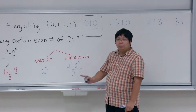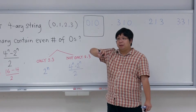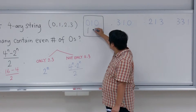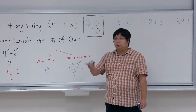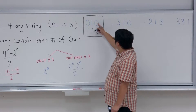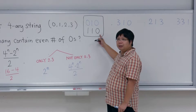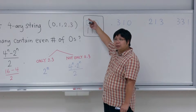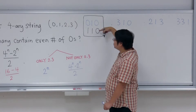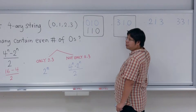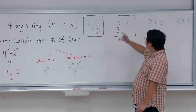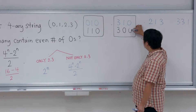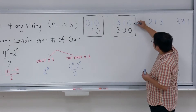The grouping works like this: for each string, we pair it with another string. We scan from left to right and look at the first position which is a zero or one. We switch it — if it is zero, switch to one; if it is one, switch to zero. So zero-one-zero pairs with one-one-zero.